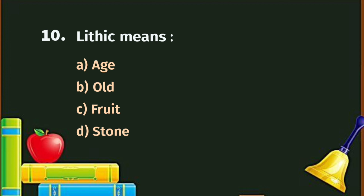Question number 10. Lithic means: A. Age, B. Old, C. Fruit, D. Stone. The correct answer is D - Stone.